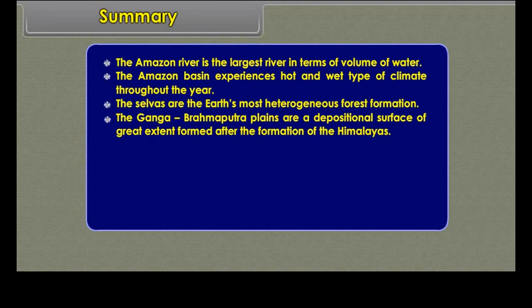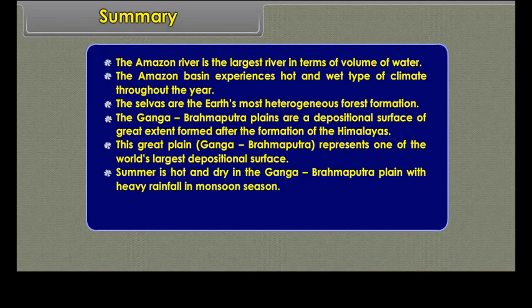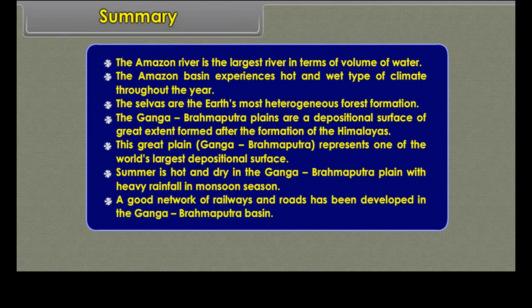In summary: the Amazon River is the largest river in terms of volume of water, and the Amazon Basin experiences a hot and wet climate throughout the year. The Selvas are the Earth's most heterogeneous forest formation. The Ganga Brahmaputra Plains are a depositional surface of great extent, formed after the formation of the Himalayas, representing one of the world's largest depositional surfaces. Summer is hot and dry in the Ganga Brahmaputra plain with heavy rainfall in monsoon season, and a good network of railways and roads has been developed across the basin.